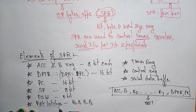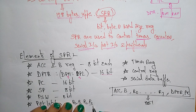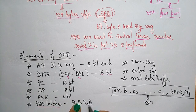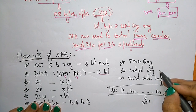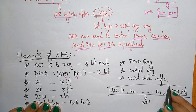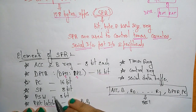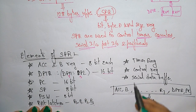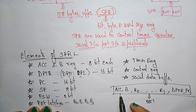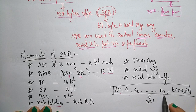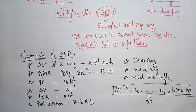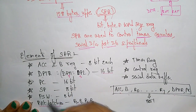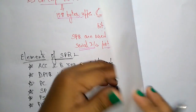The stack pointer is an 8-bit register, and the program status word is also an 8-bit register. Some special function registers include port latches: Port 0, Port 1, Port 2, and Port 3, as well as timer registers, control registers, and serial data buffer registers. The most widely used registers are the accumulator, B register, R0 to R7, data pointer, and program counter.